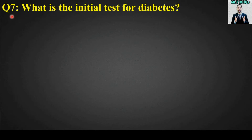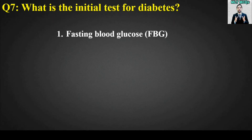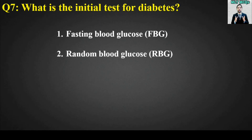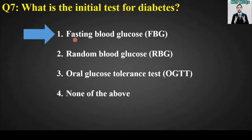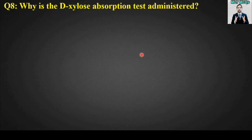MCQ number seven: What is the initial test for diabetes? This MCQ is very important for your exams and viva questions. Options are: fasting blood glucose (FBG), random blood glucose, or none of the above. The right answer is option number one — fasting blood glucose (FBG) is the initial test for diabetes.